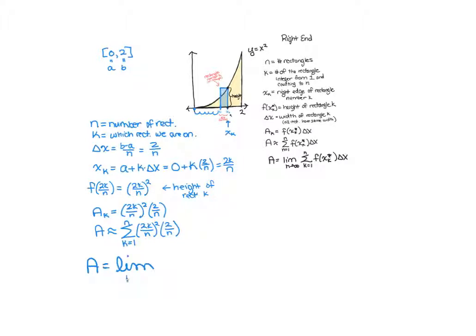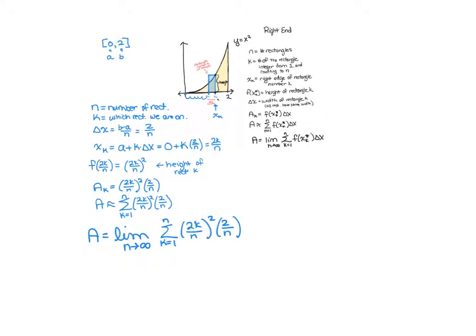And the exact area is the limit as we let the number of rectangles we have go to infinity. They get skinnier and skinnier and it gets closer and closer to the real area. So now, how do we actually find this limit?